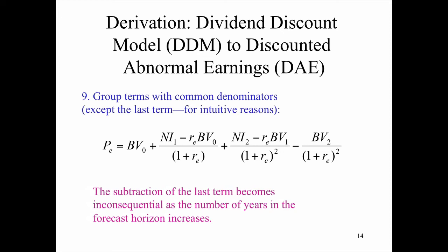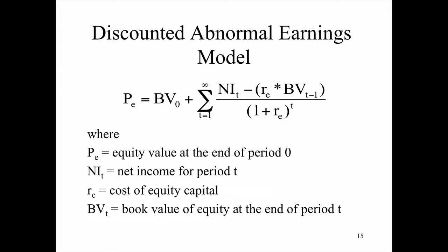Typically, the last term becomes inconsequential as the number of years in the forecast horizon increases. So we have this, and this is the overall model, and it says that the value of the equity is equal to book value plus the discounted value of abnormal earnings here for all future earnings, since we're summing them, bringing them back, and adding that, and that becomes the value of the equity. This is perhaps a little bit easier in terms of forecasting.